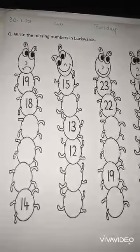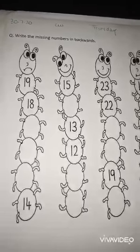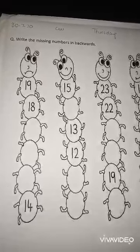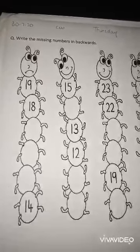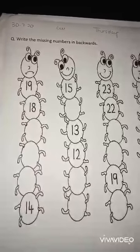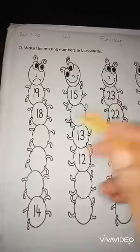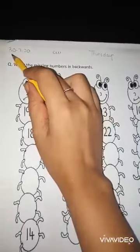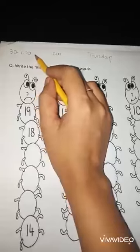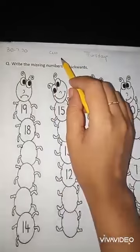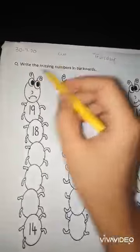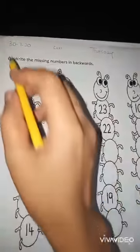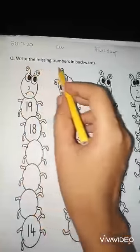Good morning everyone and Assalamu Alaikum. It's your maths peer here. As you know, in last classes we learned and practiced the missing numbers in backward. So today we practiced the missing numbers in backward in the given worksheet. The date is 30 July 2020, the day is Thursday, and it's your classwork. I write CW on the worksheet. What we have to do is write the missing numbers in backward.